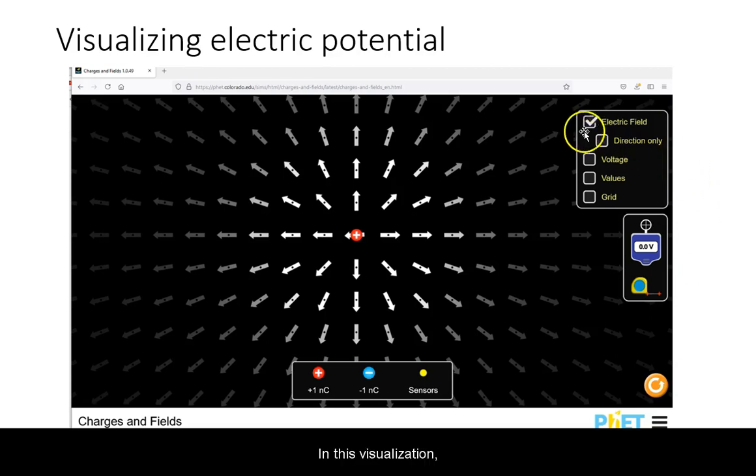In this visualization, you will see the direction of the electric field displayed in a grid of arrows where the brightness of arrows represent electric field strength. For a singular positive charge, the electric field is pointing away from it and the strongest closest to the charge.